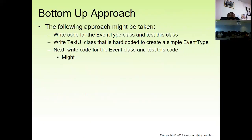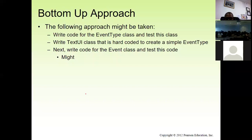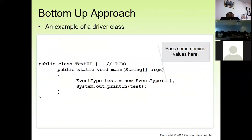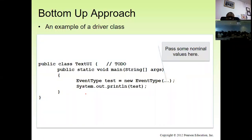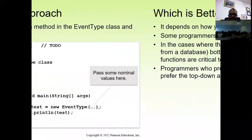The following approach might be taken: write code for the EventType class and test it, then write a TextUI class hard-coded to create a simple event type. Next, write code for the Event class and test it. Here's an example of a driver class where we have a main method, create an EventType called 'test,' pass in some nominal values, and print a message. This is an example of putting a main method inside a class to do some testing of the EventType class.